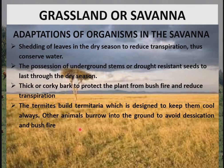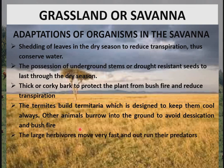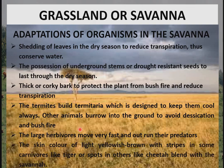Termites build termitaria — singular termitarium — which are designed to keep them cool. Other animals burrow into the ground to avoid desiccation and bushfire. Large herbivores move very fast to escape from their predators. Some carnivores like tigers have a light yellowish-brown skin color with stripes that blends with their environment, a camouflage adaptive feature that prevents them from being easily caught by prey or detected by other predators.